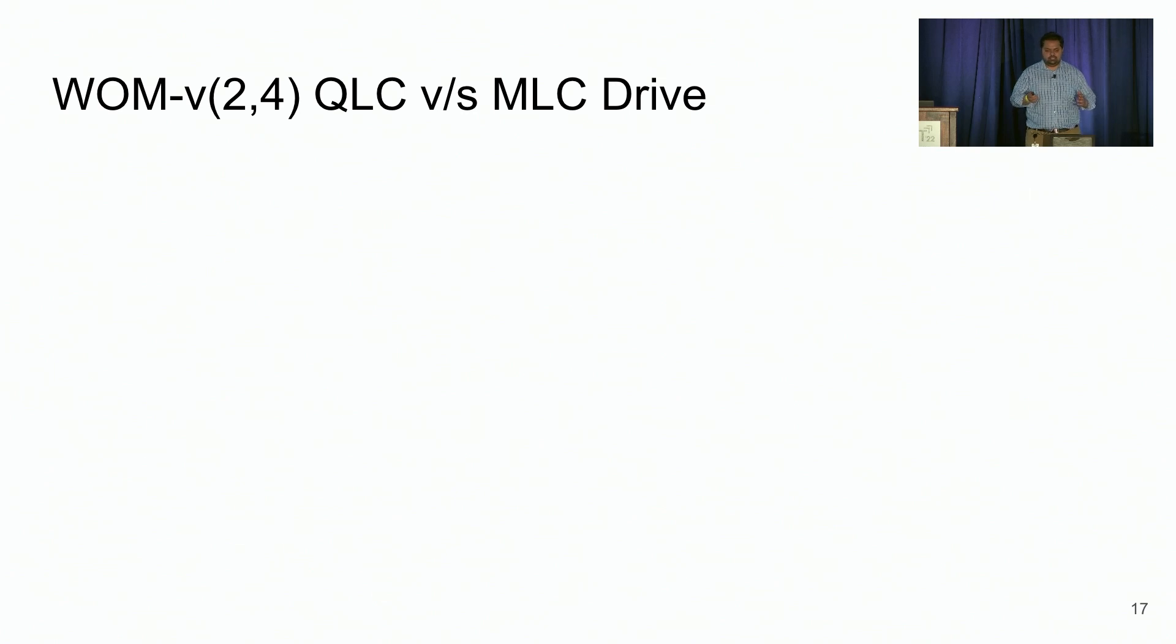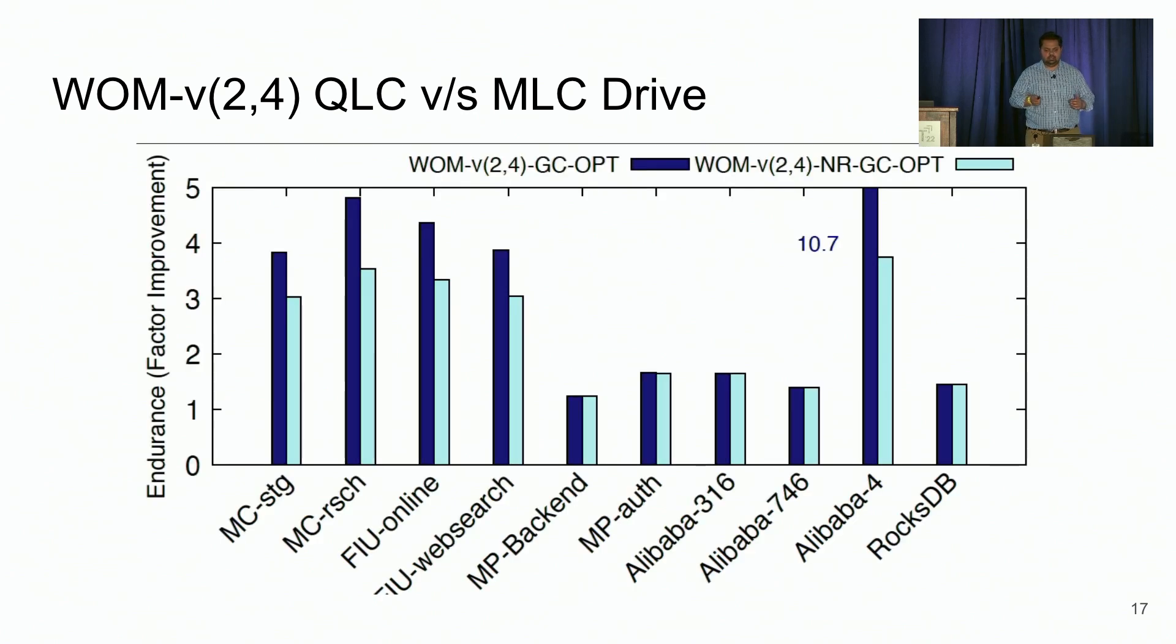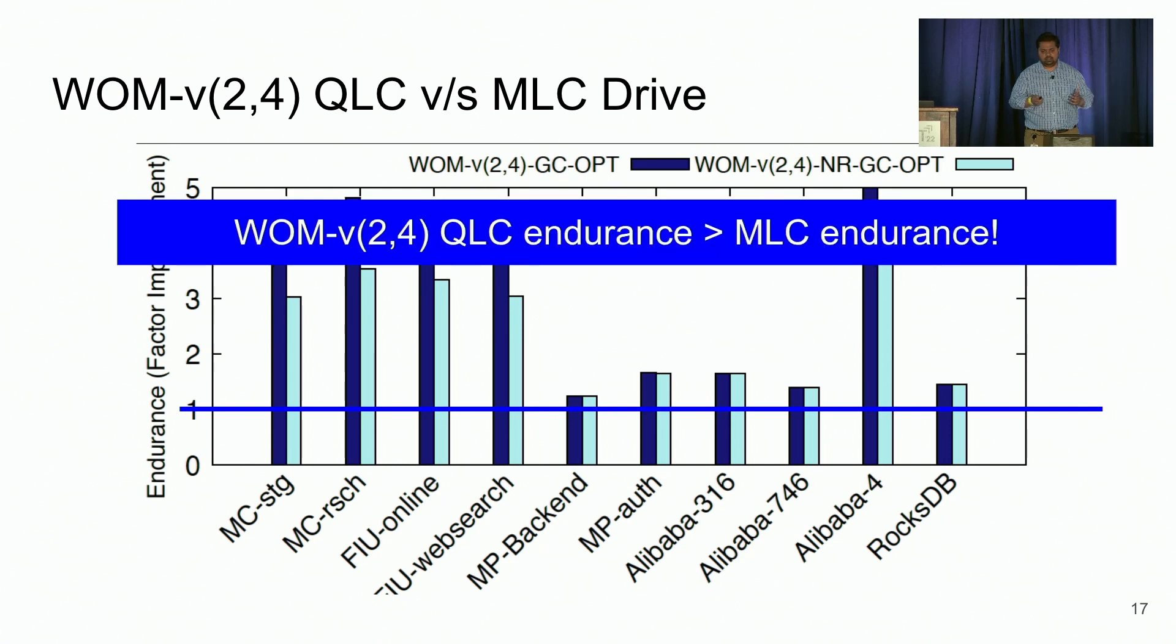And in order to answer that, we run all our workloads on the x-axis, and we compute the ratio of the endurance gains in WOM V(2,4) configuration to the endurance gains in MLC drive configuration. On the y-axis, any number greater than one indicates WOM V(2,4) QLC endurance beats MLC drive endurance. And we are able to see that consistently across all workloads, WOM V(2,4) QLC endurance beats the MLC endurance.